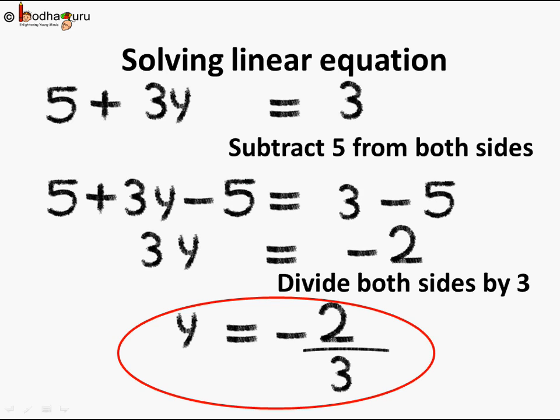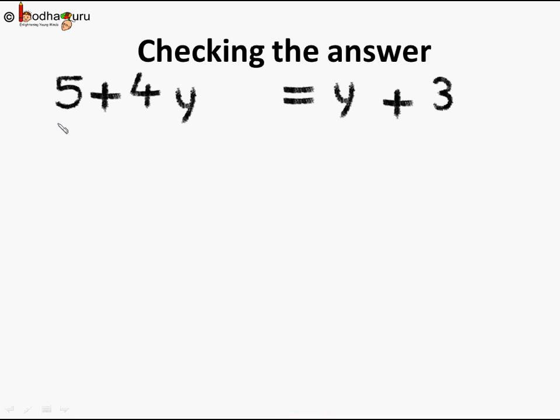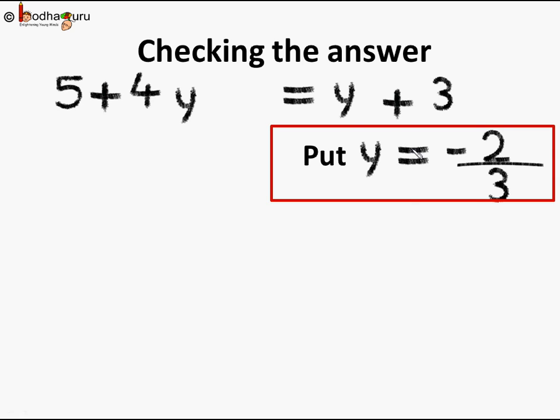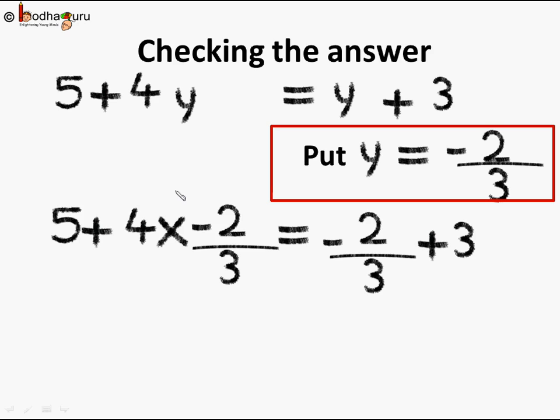This is the solution. How do you check it? Let's put the value of y in the given linear equation. So here is the equation which we were given: 5 plus 4y is equal to y plus 3. Let's put y equal to minus 2 by 3. Putting the value, what do we get? We get 5 plus 4 multiplied by—instead of y we write minus 2 by 3—which is equal to